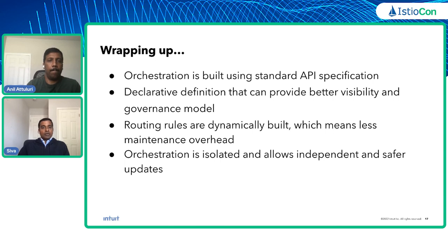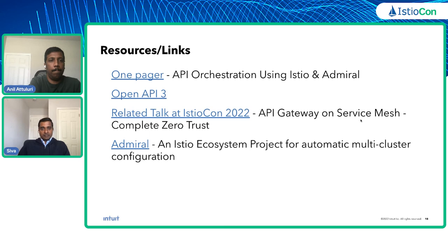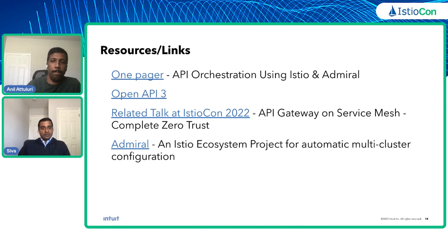This slide has some useful links. The first link is a one-pager document we created in the Admiral repo, where all the details from today's talk are available — we encourage you to go there, add your comments, and review it. We also have a related talk on API gateway on service mesh tomorrow, where Anil and another Intuit engineer will give more details on how Intuit has deployed API gateway on service mesh. The last link is for the Admiral repo — Admiral is an open source project in the Istio ecosystem, and we encourage you to go to the GitHub repo, star it, support, and contribute to Admiral.